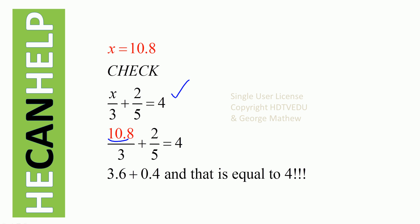We see that 10.8 divided by 3 is 3.6. 2 over 5 is 0.4. What is 3.6 plus 0.4? It's 4. And we are good.